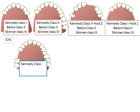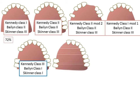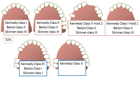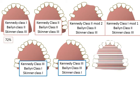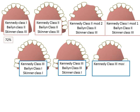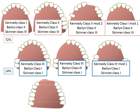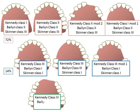A single edentulous space bounded by teeth anterior and posterior to it is Kennedy Class 3, Balen Class 1, and Skinner's Class 1. A similar image becomes Balen Class 3 — a bounded saddle with more than three teeth missing — and Skinner's Class 1. Kennedy Class 3 modification 1 with Balen Class 1 and Skinner's Class 1 corresponds to 14 percent incidence according to Skinner. Teeth missing in the anterior region correspond to Kennedy Class 4, Balen Class 3 (bounded saddle, more than three teeth missing), and Skinner's Class 2 — all teeth present posterior to the denture base.